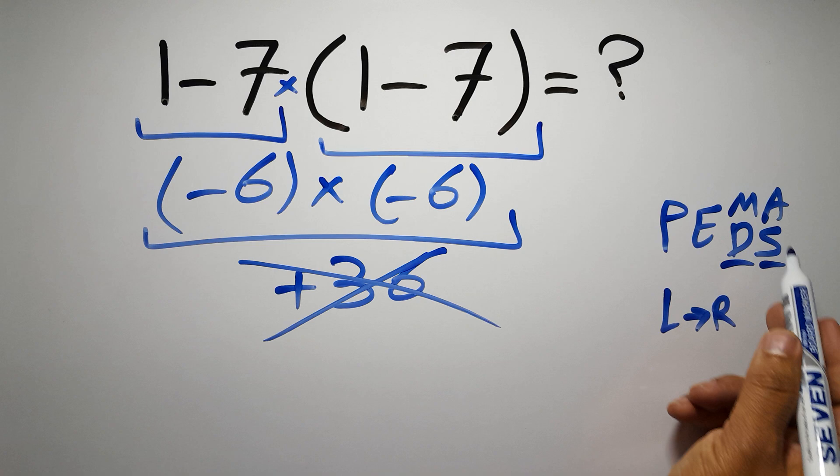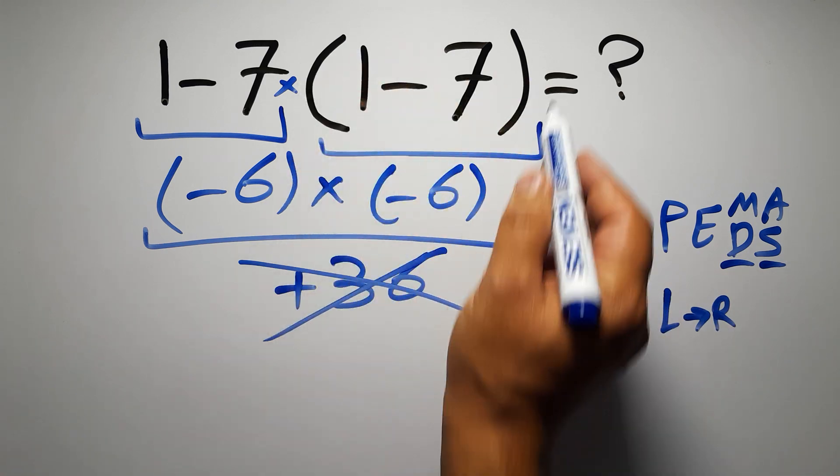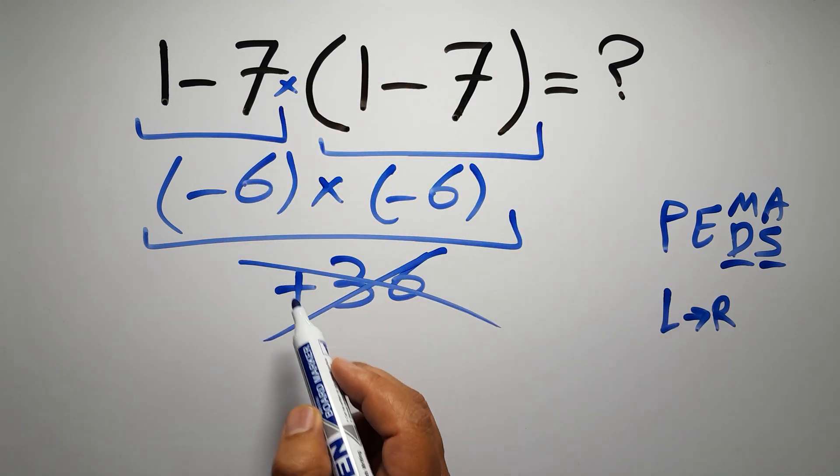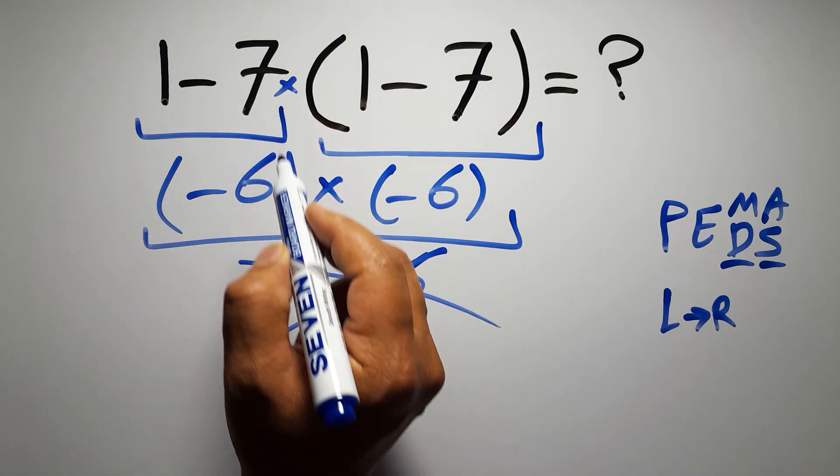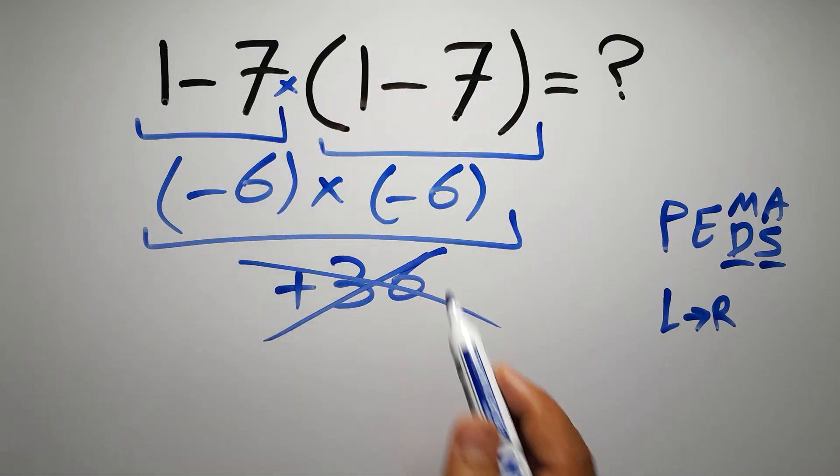So according to the PEMDAS, first we have to do this parentheses, then this multiplication and finally this subtraction. If we do this subtraction before this multiplication or this parentheses it is wrong.